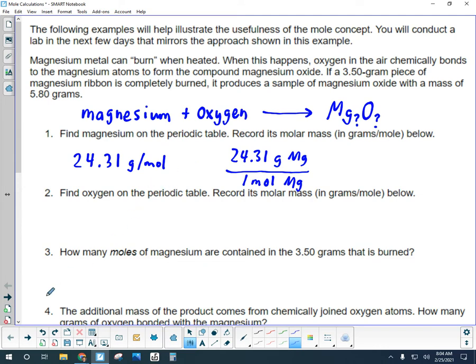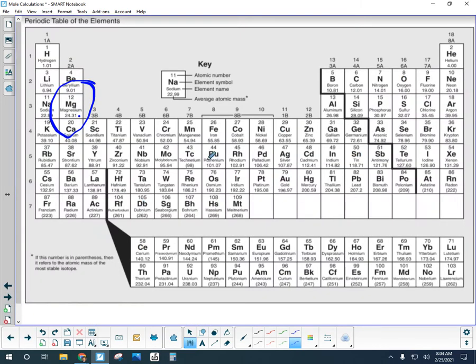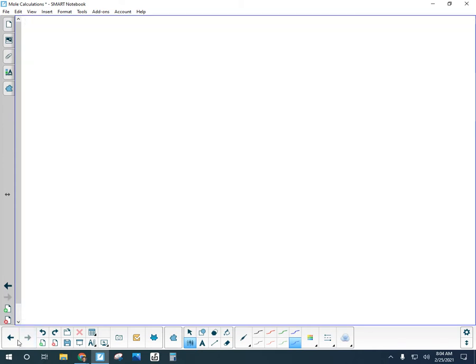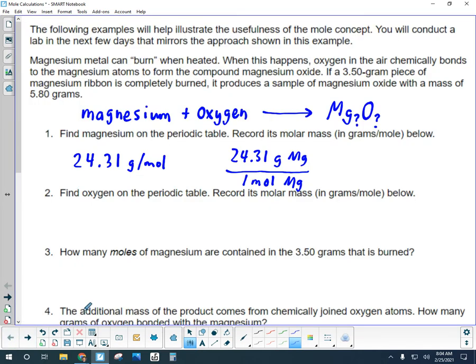And each element has its own different molar mass because each element has its own relative mass. If we go and look for oxygen, we see that the molar mass amount is 16.00. So 16.00 grams per mole means there are 16.00 grams of oxygen in one mole of oxygen.